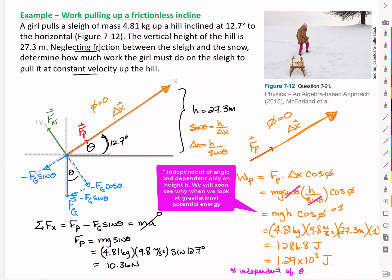I did the same amount of work either way, but that's true here because there was no friction. If we had friction, then the path that we take, whether it's a long path or a short path, would make a difference because it would determine how much work we're doing against friction. But in this case, with a frictionless incline, the answer, the amount of work, is independent of theta.